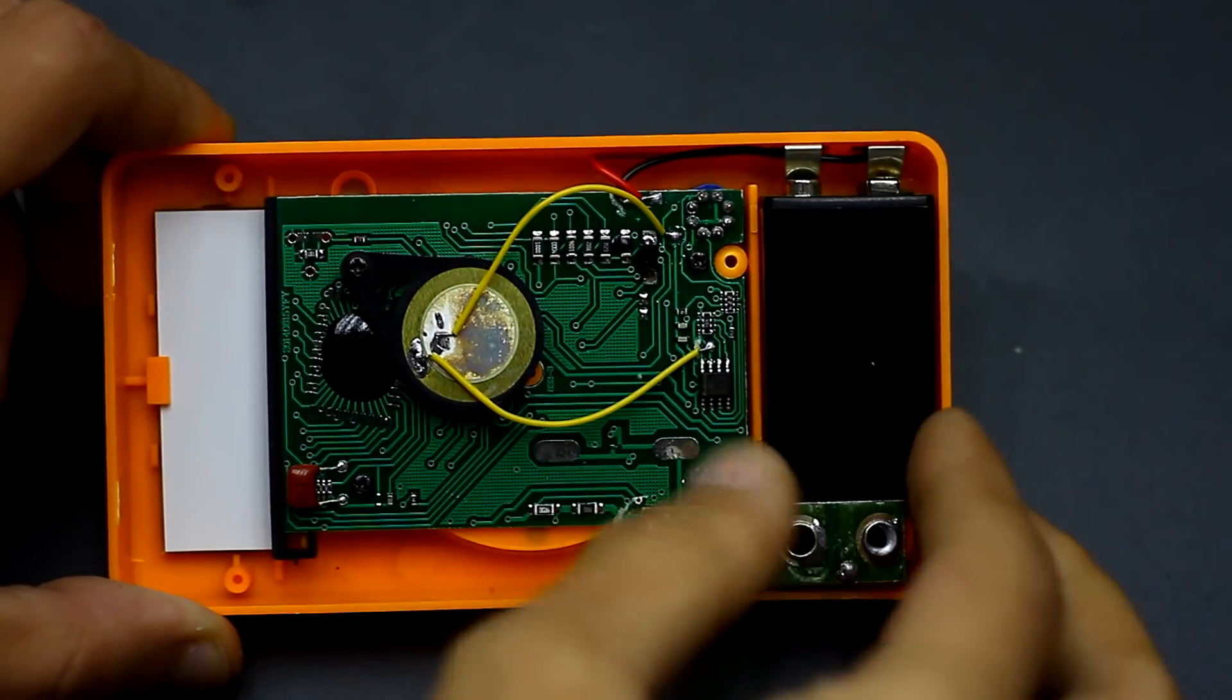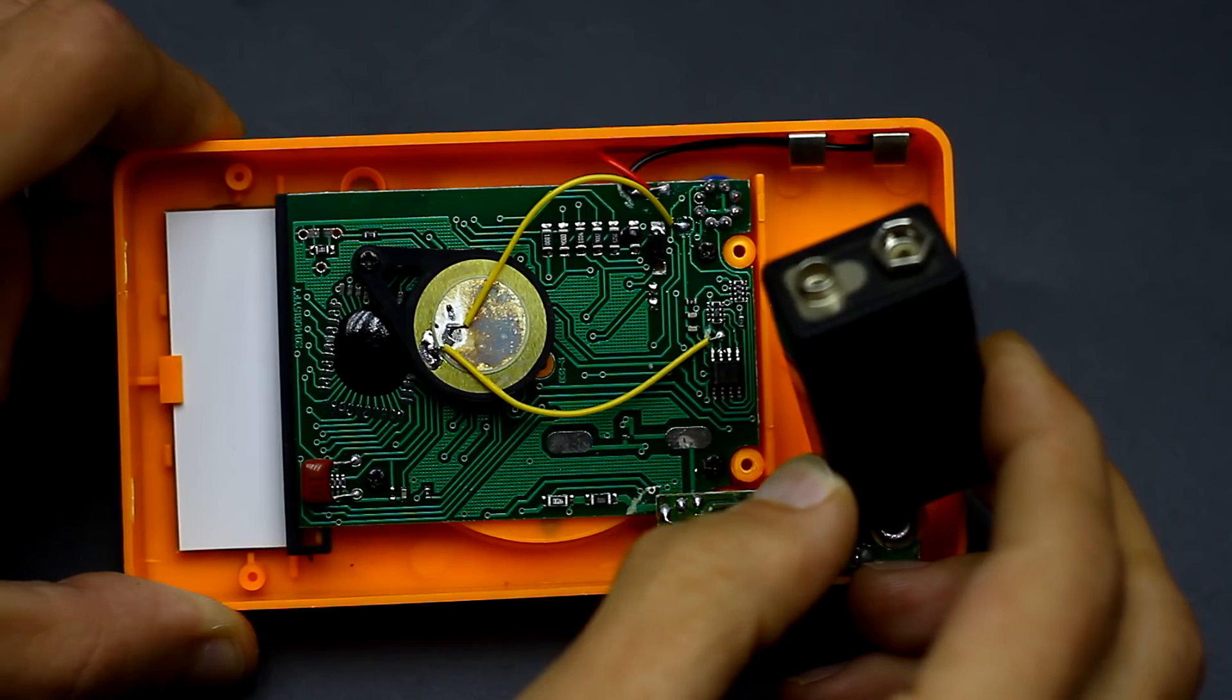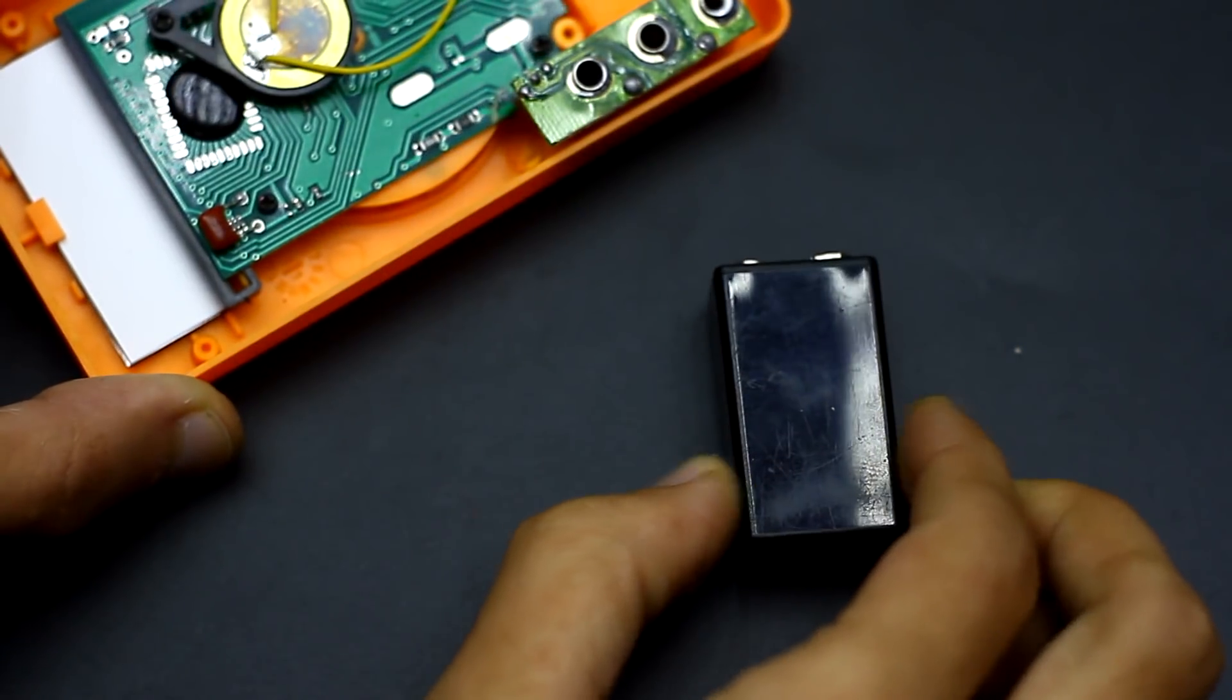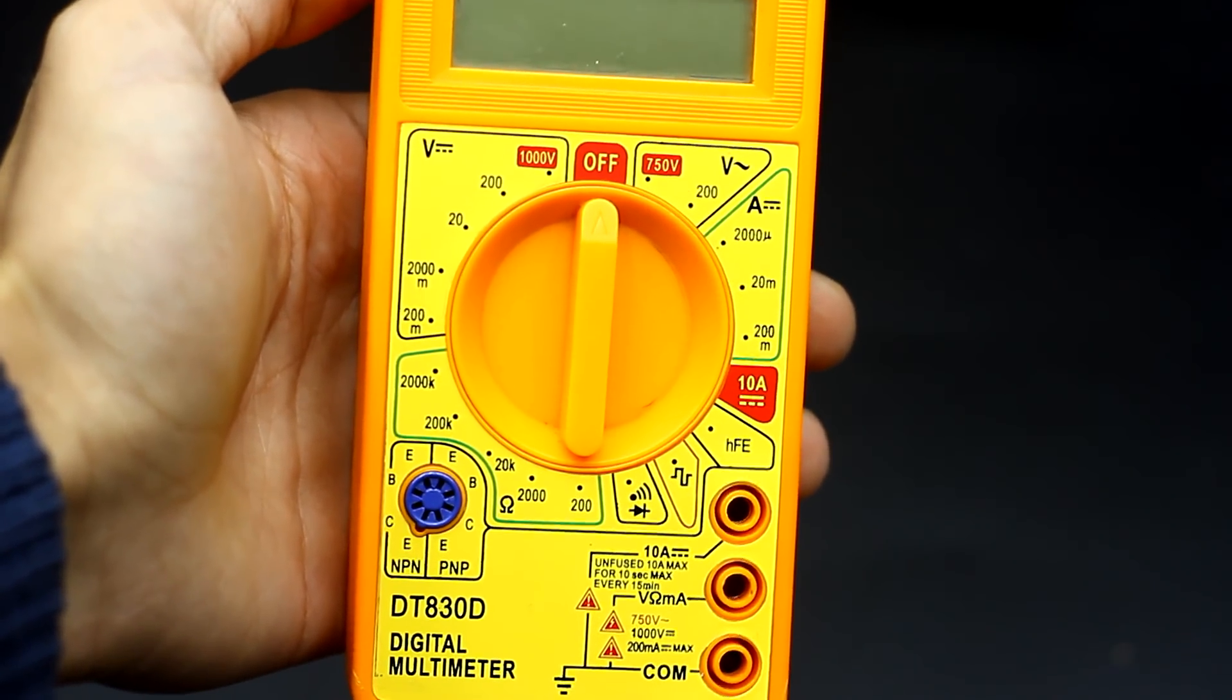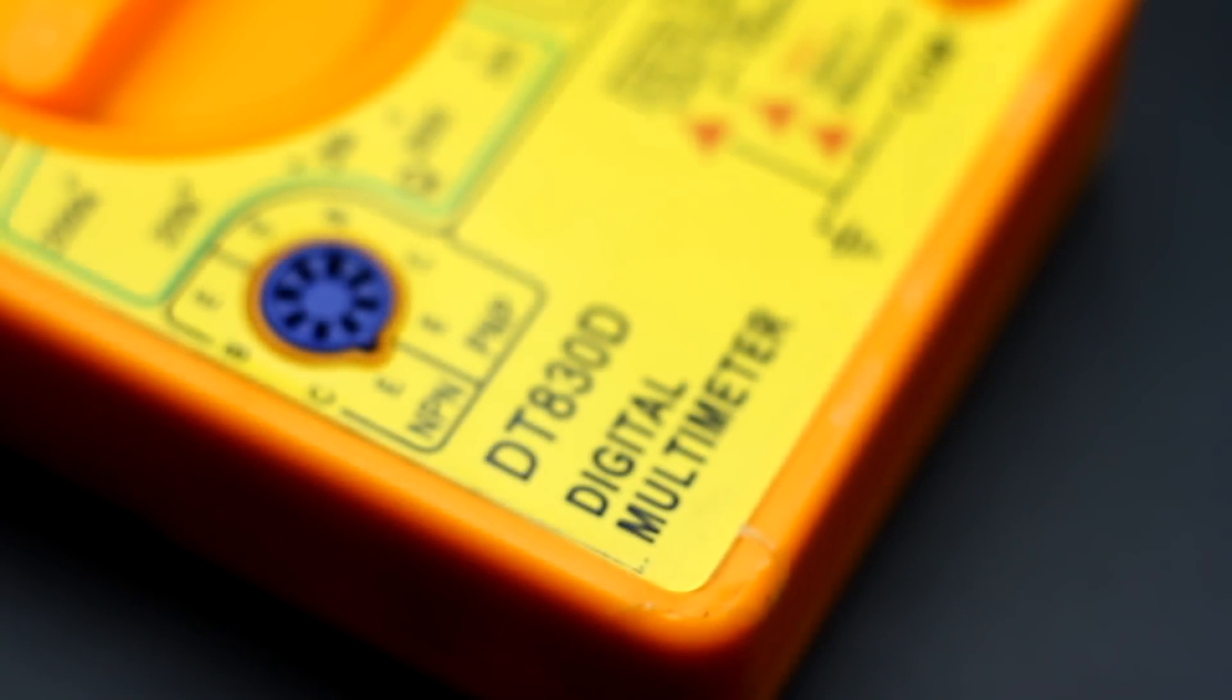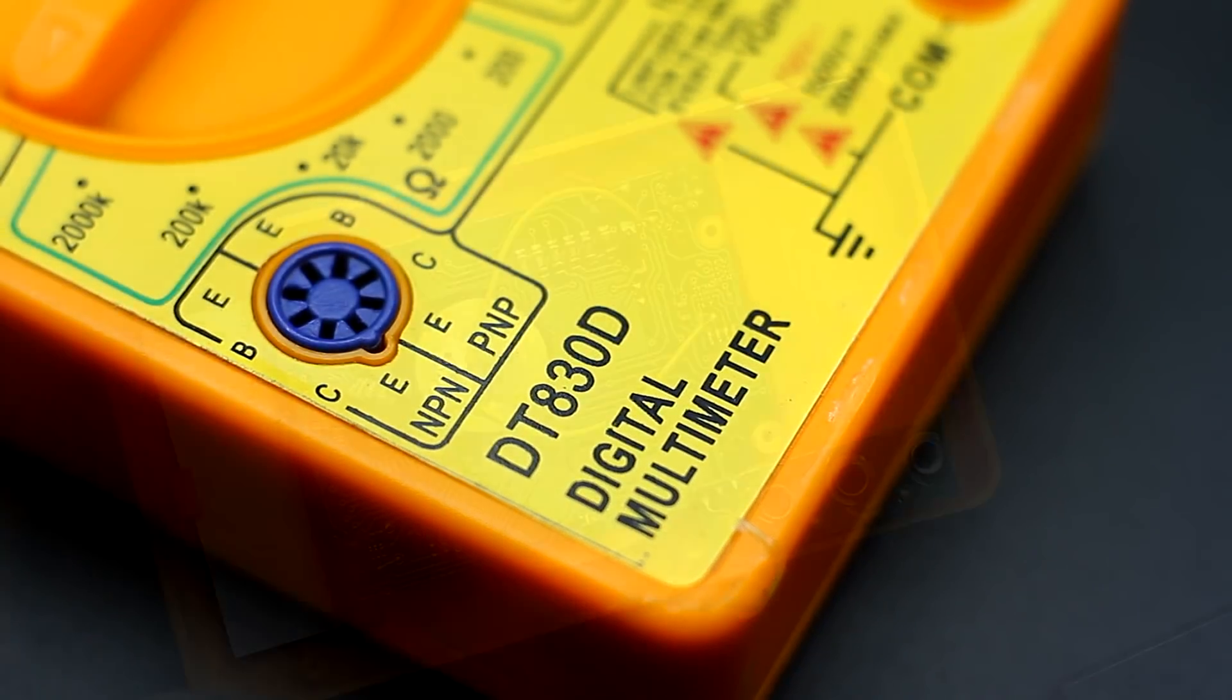Many of us have multimeters powered by a 9V 6F22 type battery. If the multimeter doesn't have auto power off, then the batteries will have to be changed very often. But even with auto power off with active use,